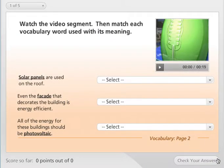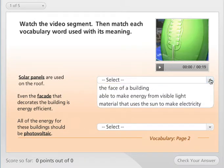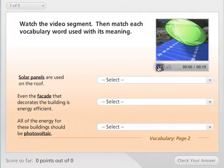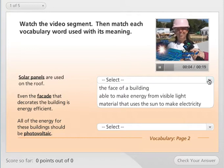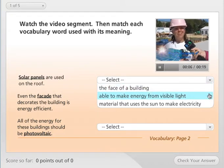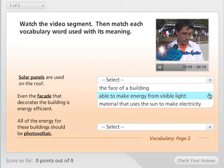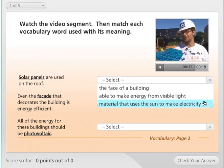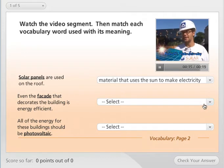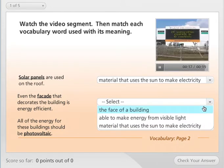Watch the video segment, then match each vocabulary word used with its meaning. We're focused on this house and we are really excited about it with our solar panels and our solar hot water heater. And we try to do like a movable roof to attract the sun. The first thing you will mention is a facade that is 100% photovoltaics.